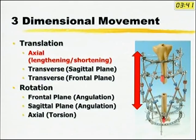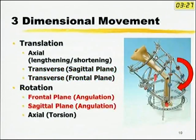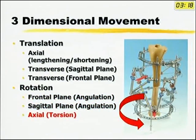With these same six struts, you can do an axial movement, which is lengthening or shortening; transverse movements in either the sagittal or the frontal plane; angulation, which is a rotational movement in the frontal or the sagittal plane; and torsion — rotating one set of rings relative to the other. So all six degrees of freedom are addressed.